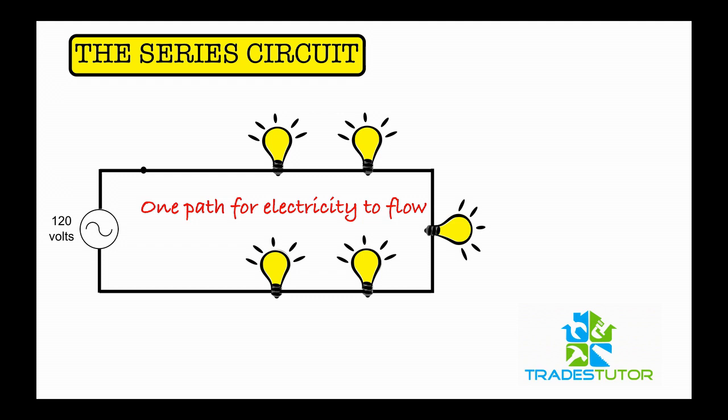But what if this happens? What if one of the light bulbs goes off? And the idea in a series circuit, if one is out, they're all out. All right. So now let's just turn them back on. And then we're going to go through some calculations involved with the series circuit.